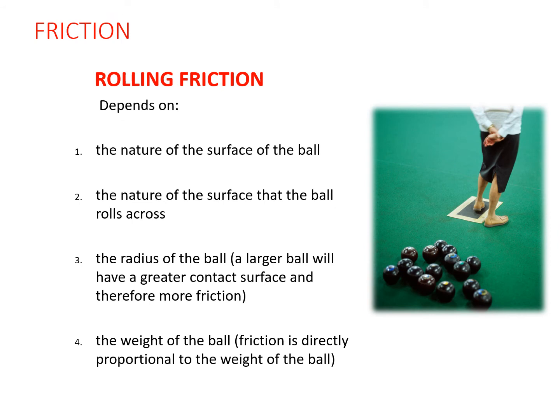The second type is rolling friction, involving balls rolling over a surface — relevant to soccer, lawn bowls, and billiards. In some sports we can manipulate rolling friction; in others we are simply mindful of how the two surfaces interact. This is less likely to appear explicitly on the exam.